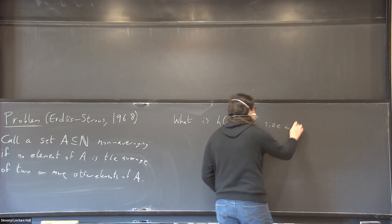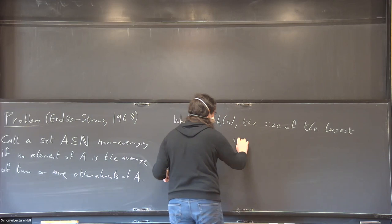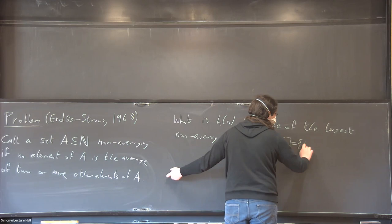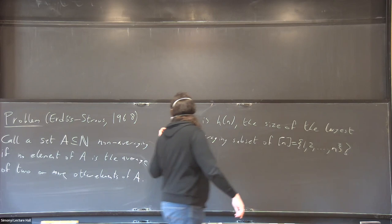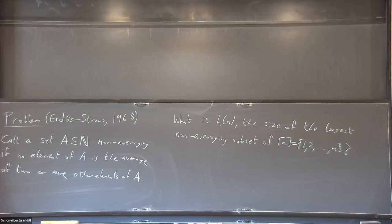The question is: what is the size of the largest non-averaging subset of {1, ..., N}? This question goes back to the late 1960s. It's actually stated in the paper of Strauss, but there's an earlier problem about non-dividing sets, where no element of A should divide the sum of some other elements of A. The problems are fairly closely tied as well.